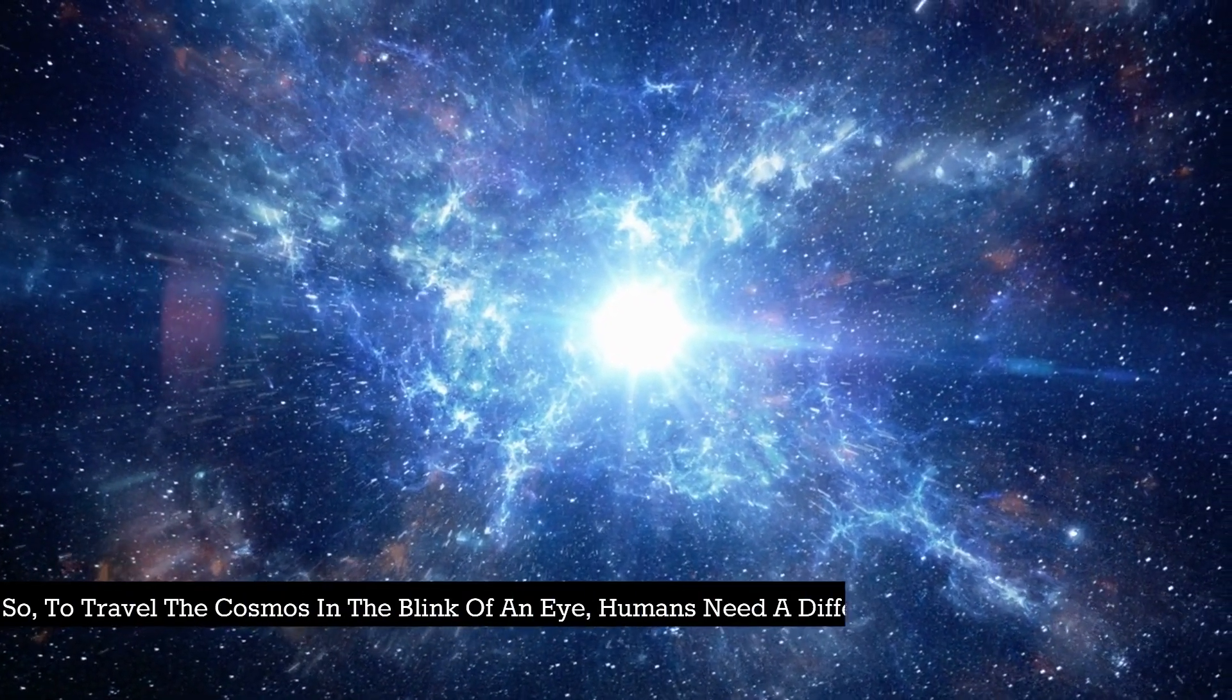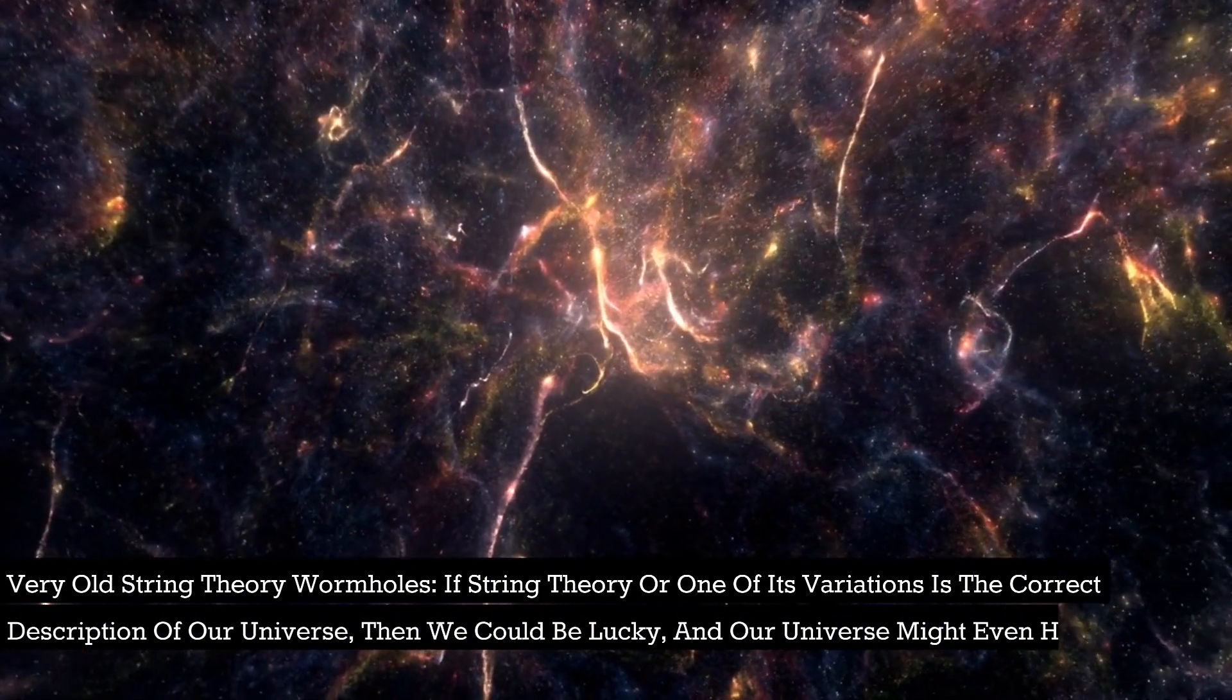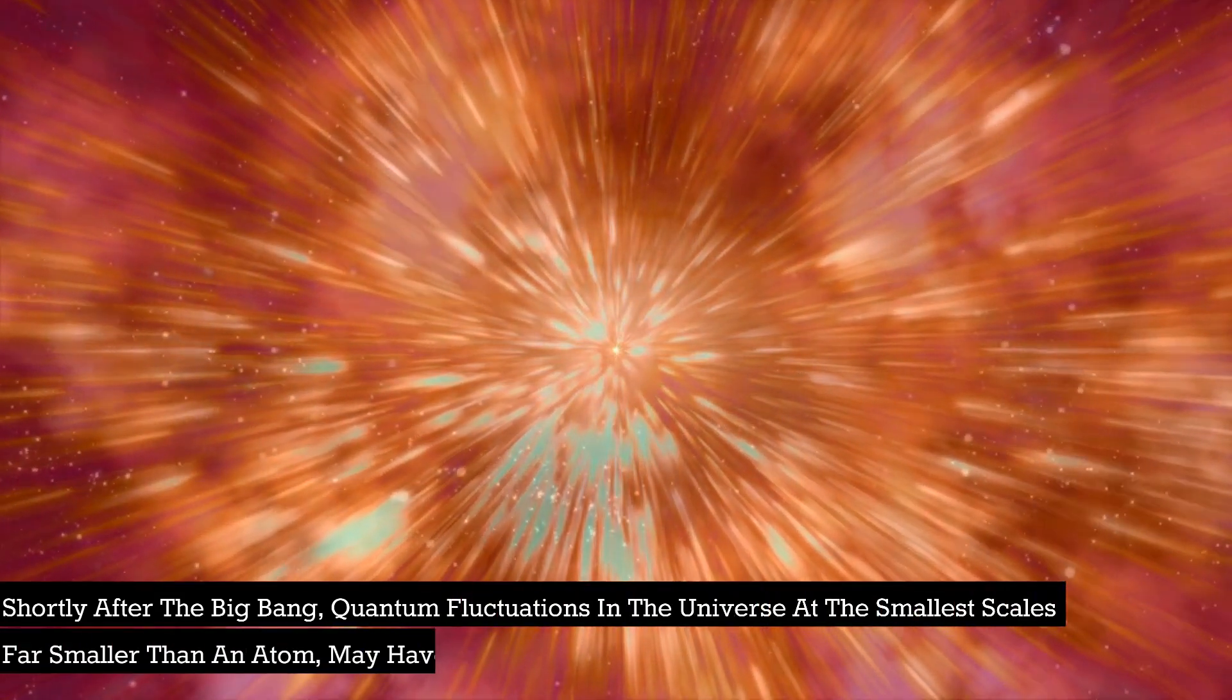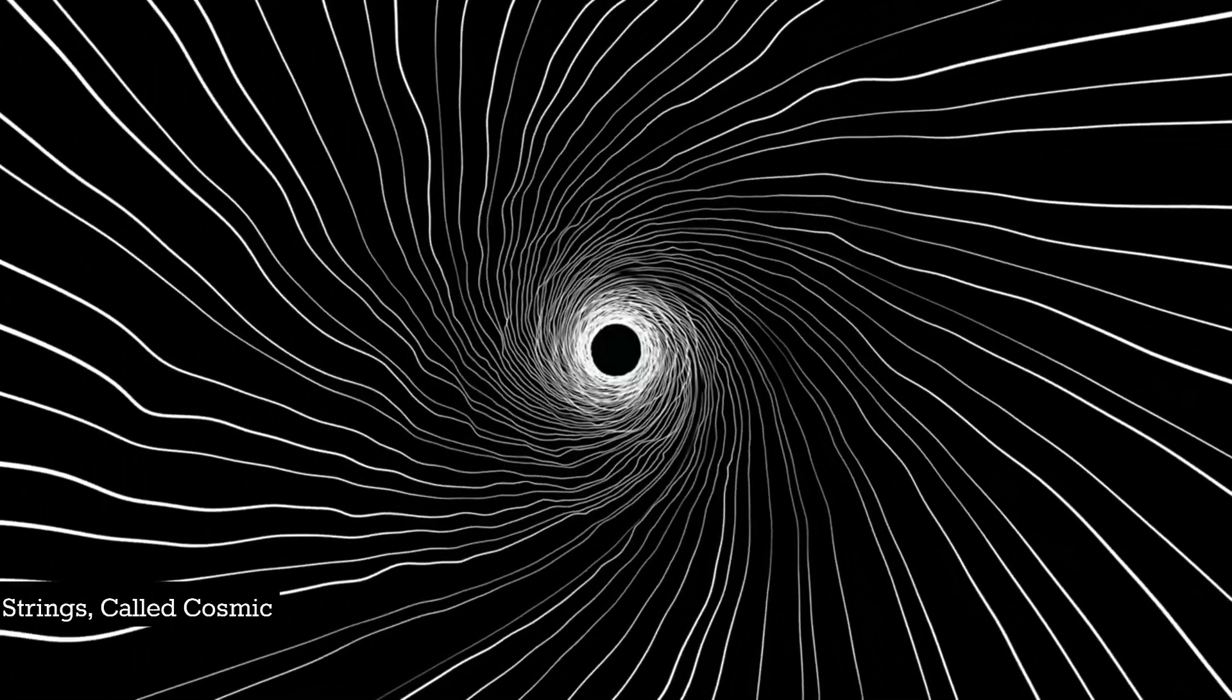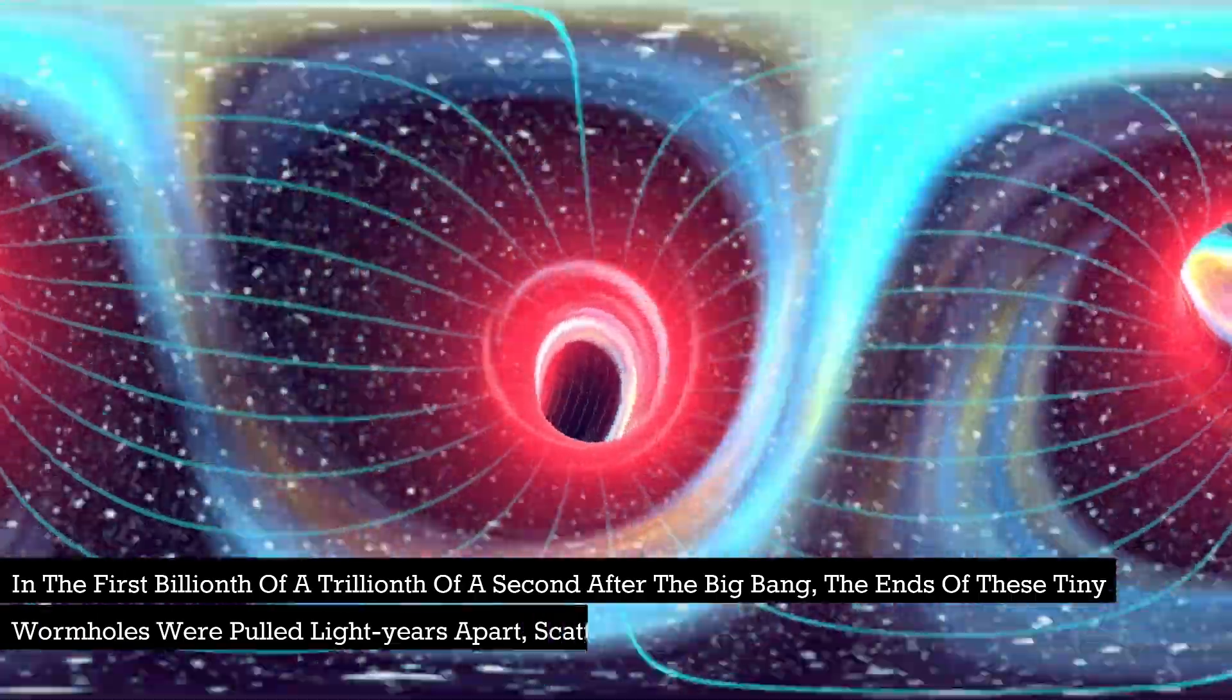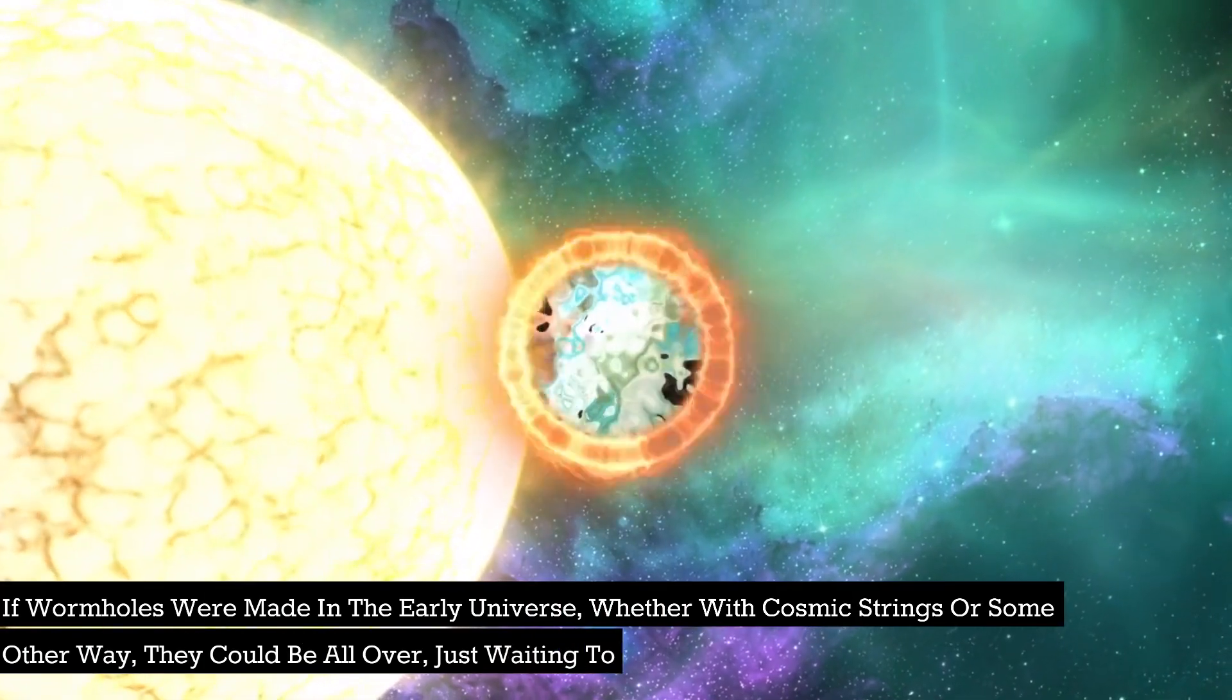Very old string theory wormholes. If string theory or one of its variations is the correct description of our universe, then we could be lucky and our universe might even have a tangled web of countless wormholes already. Shortly after the Big Bang, quantum fluctuations in the universe at the smallest scales - far smaller than an atom - may have created many traversable wormholes threaded through with strings called cosmic strings. In the first billionth of a trillionth of a second after the Big Bang, the ends of these tiny wormholes were pulled light years apart, scattering them through the universe. If wormholes were made in the early universe, whether with cosmic strings or some other way, they could be all over, just waiting to be discovered.